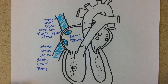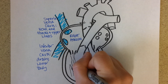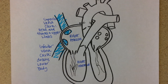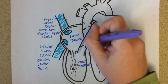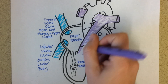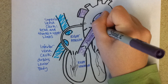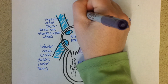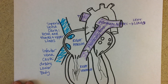The heart gives a little pump and pushes blood down into the right ventricle. When the right ventricle pumps, it pushes blood up and out through the pulmonary trunk and arteries. That sends the blood to the lungs — both the left lung and the right lung.